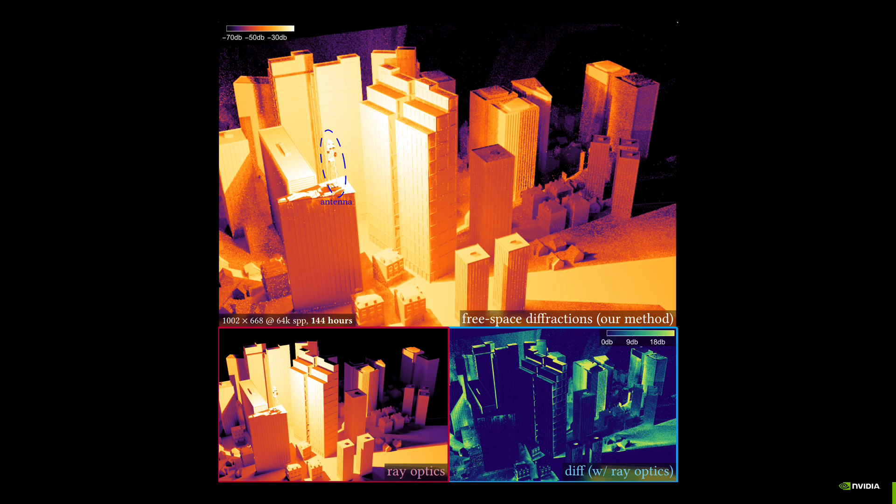This image shows a simulation of radio wave propagation from an antenna on top of a building on the left. Given the long wavelengths of radio waves, diffraction around the building's edges is crucial to account for.